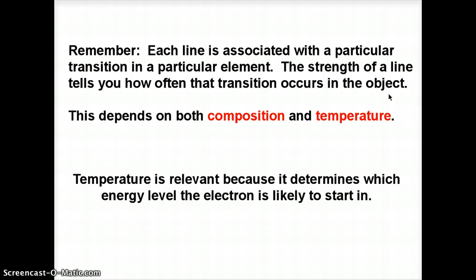Now, the key thing to remember is that any line that you see is associated with a particular transition between energy levels in a certain element. So if we see a line at 650 nanometers, that's like the H-alpha line, that comes from the N equals 2 to 3 transition in hydrogen. If it was a different element, the transition from 2 to 3 would have a different wavelength. Each line goes with a particular element in a particular transition. Now, the strength of that line tells you how often that transition occurs.